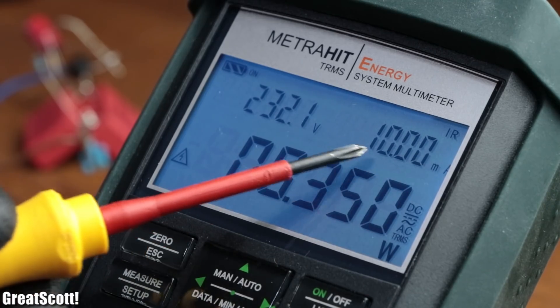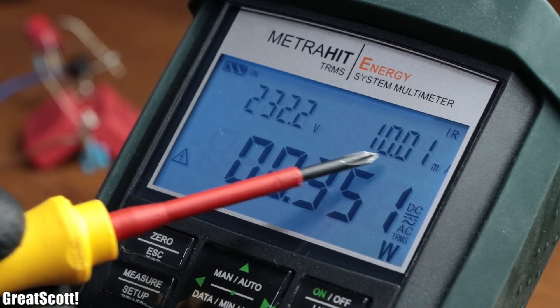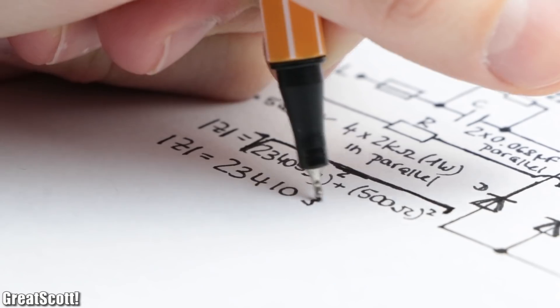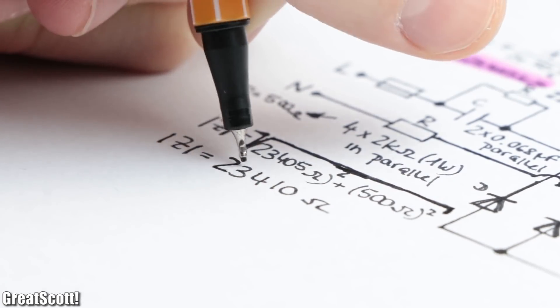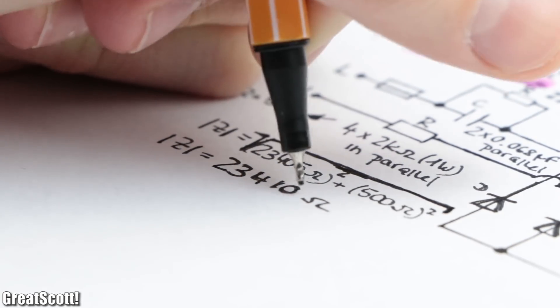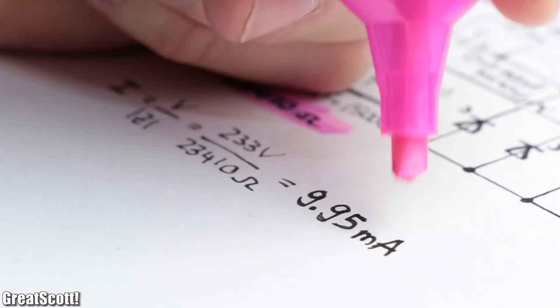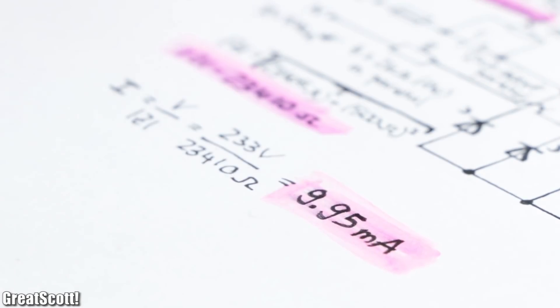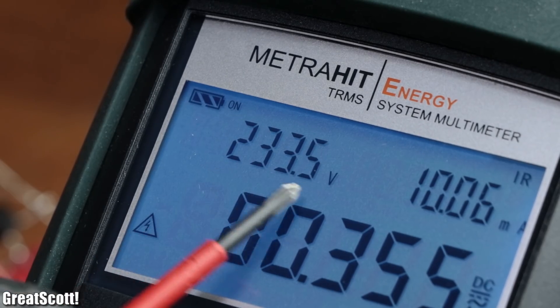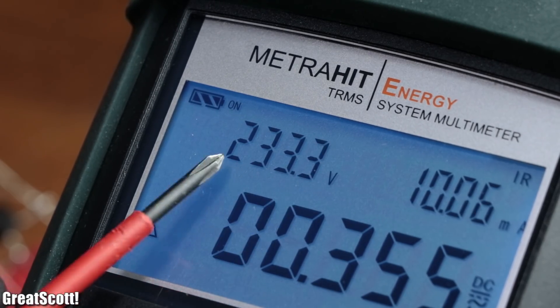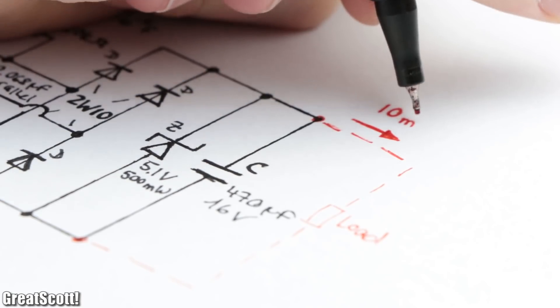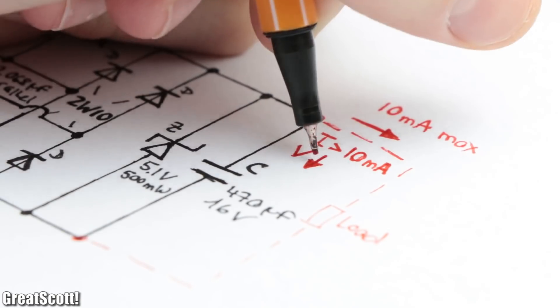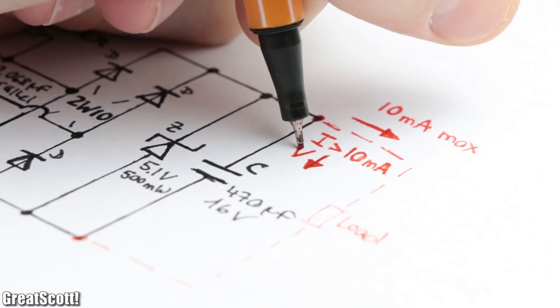The circuit drew 10 milliamps while doing nothing, which makes mathematical sense. Because if we use the reactance of the capacitor and combine it with the resistance of the inrush current resistor to calculate the overall impedance, then we can calculate a current flow of not surprisingly 9.95 milliamps when using a voltage value of 233 volts AC. That means we can only draw a maximum of around 10 milliamps at the output of the circuit, otherwise our stable 5.1 volts would break down.